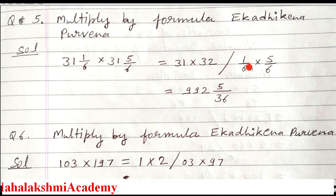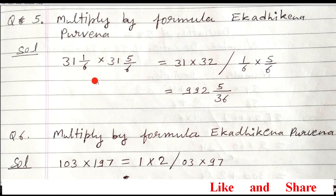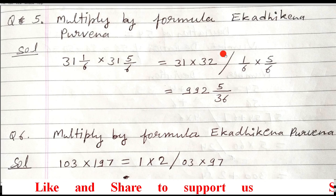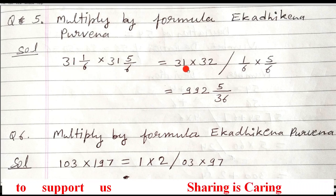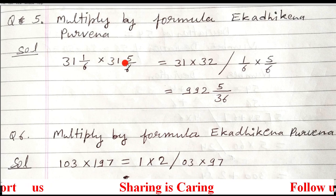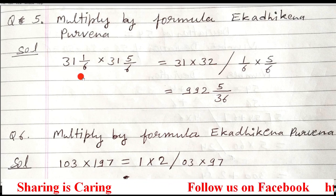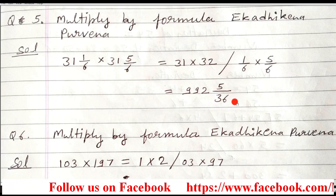If you can cancel, cancel; otherwise just multiply. 5 and 5 are 5, 6 times 6 is 36 — multiply them and that's the answer. The method is very easy, but you should recognize which method and what process you are going to use. Write down 31 as it is, 31 Ek Adhik is 32, put a long slash, write the fractions 1 upon 6 and 5 upon 6, and multiply like this.